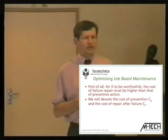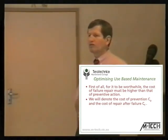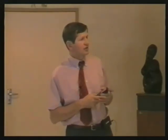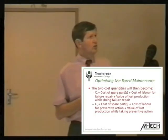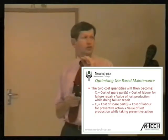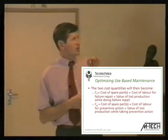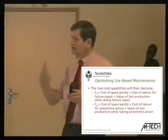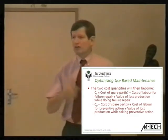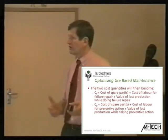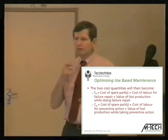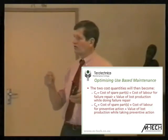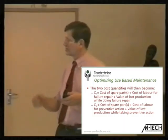To analyze that, we denote the cost of prevention as CP and the cost of failure as CF. We want to look at two cost quantities: the cost of failure, defined as the cost of spare parts under failure circumstances plus the cost of labor plus the cost of loss incurred while doing failure repair. Likewise, the cost of prevention is the cost of spare parts under preventive circumstances, plus the cost of labor under preventive circumstances, plus the cost of lost production under such circumstances.